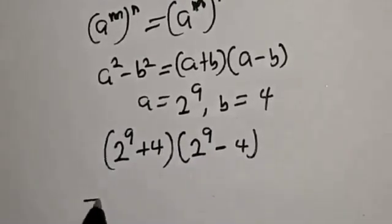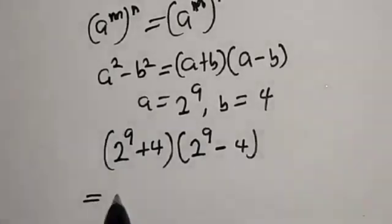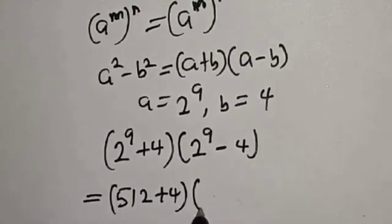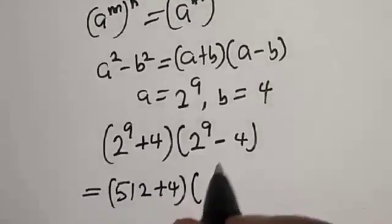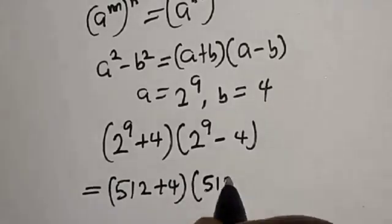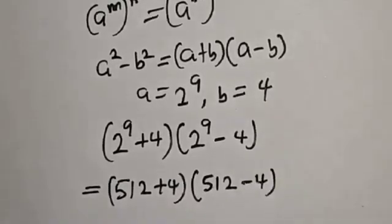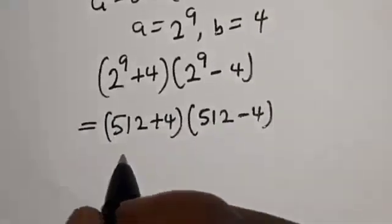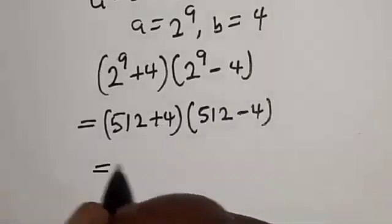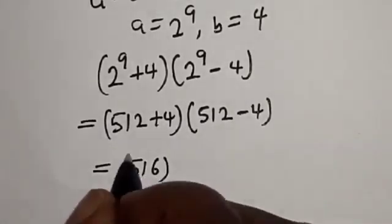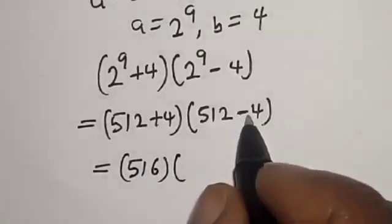Substituting, we get 2 raised to power 9 plus 4, multiplied by 2 raised to power 9 minus 4. Now, 2 raised to power 9 is 512, so this becomes 512 plus 4, multiplied by 512 minus 4.